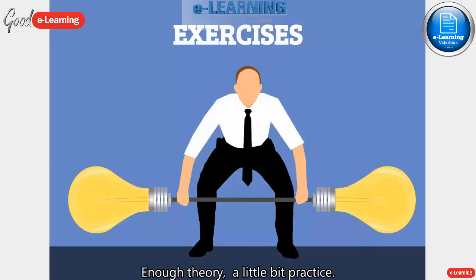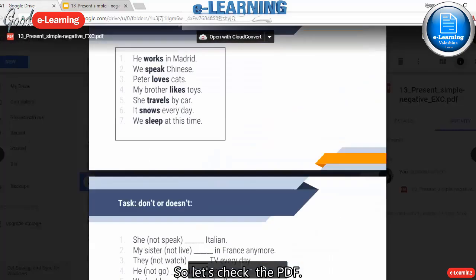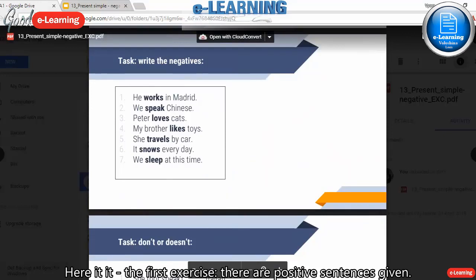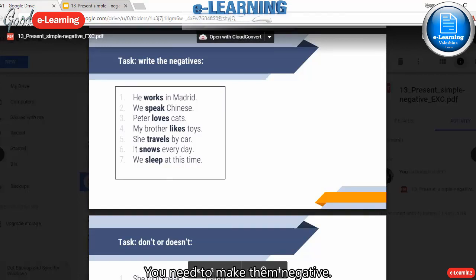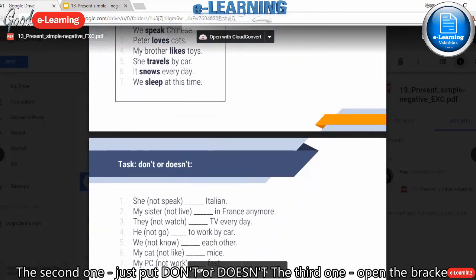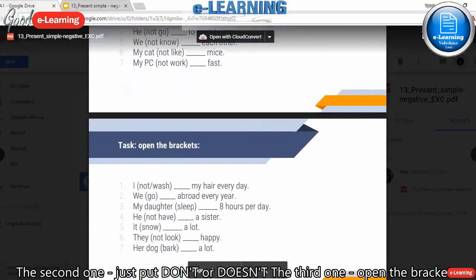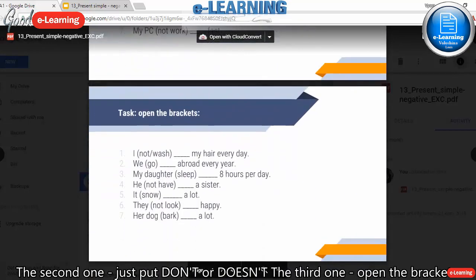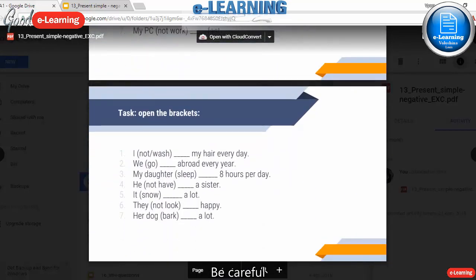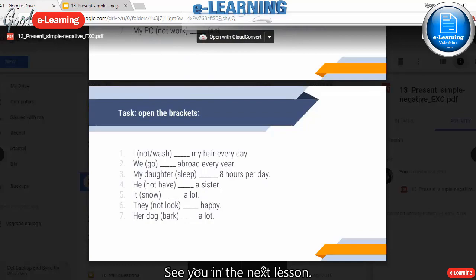Enough theory — a little bit of practice. Let's check the PDF. The first exercise: there are positive sentences given and you need to make them negative. The second one: just put don't or doesn't. The third one: open the brackets. Be careful whether we have a positive or negative form. Good luck. See you in the next lesson.